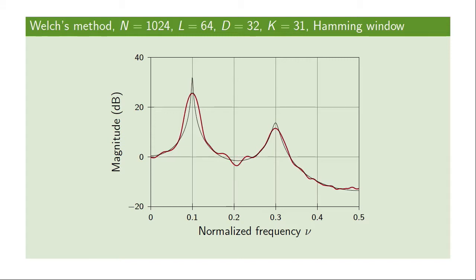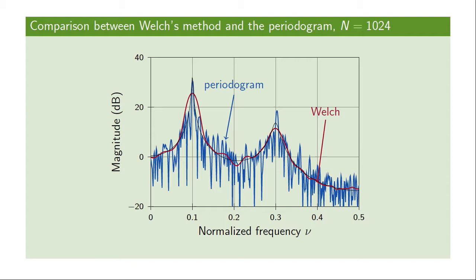With a larger number of blocks, the variance between estimates across different realizations is reduced. Welch's method creates an estimator that is consistently more reliable for estimating the power spectral density at any particular frequency. Comparing the Welch estimate (red) to the periodogram estimate (blue) using the same 1024 samples, the Welch estimate is consistently closer to the true power spectrum. The price paid is decreased resolution — sharp peaks in the true PSD are not captured as well due to the shorter window with a wider main lobe.